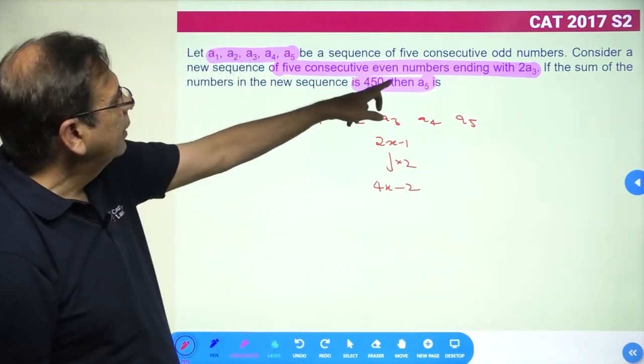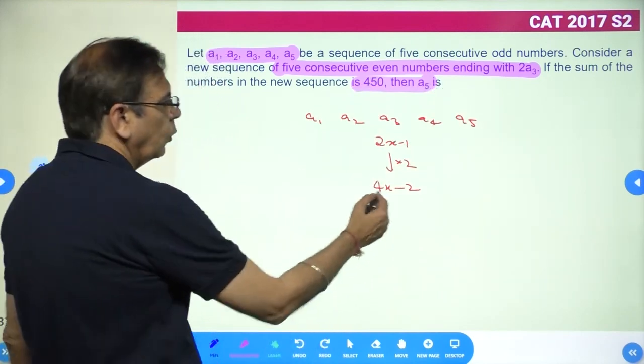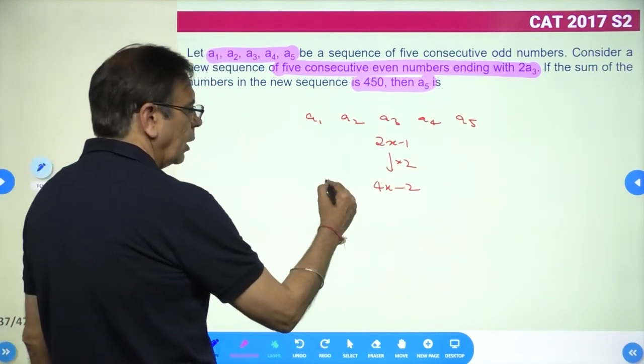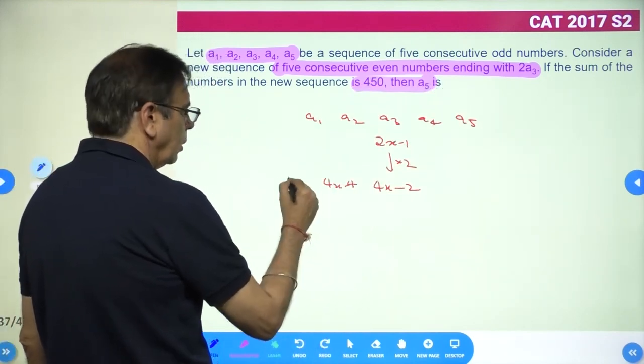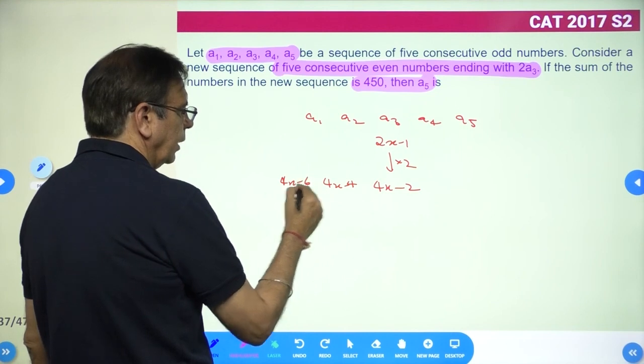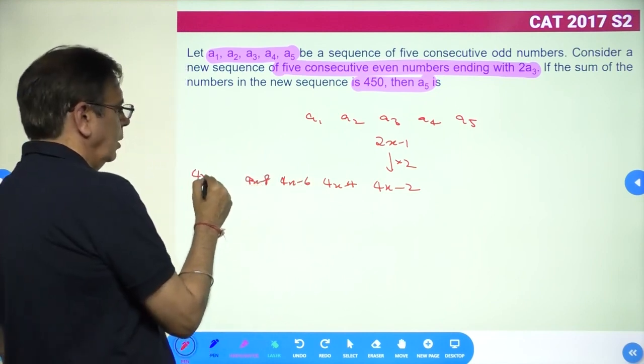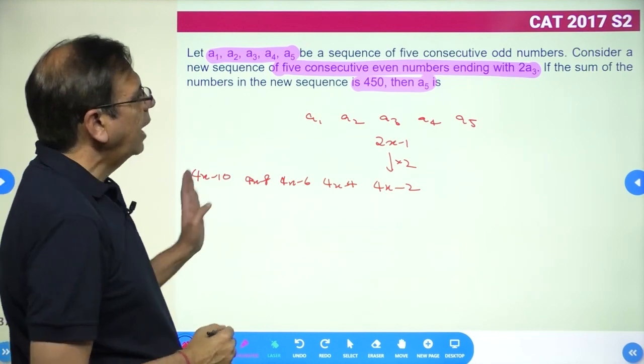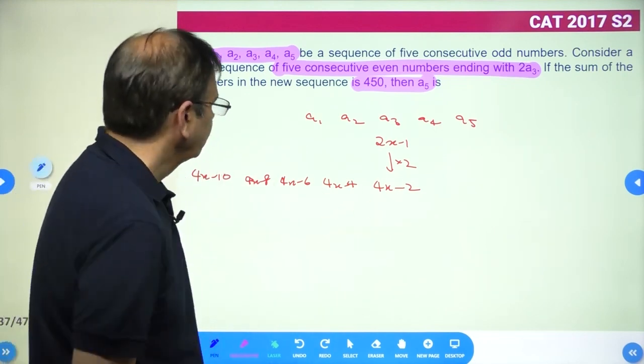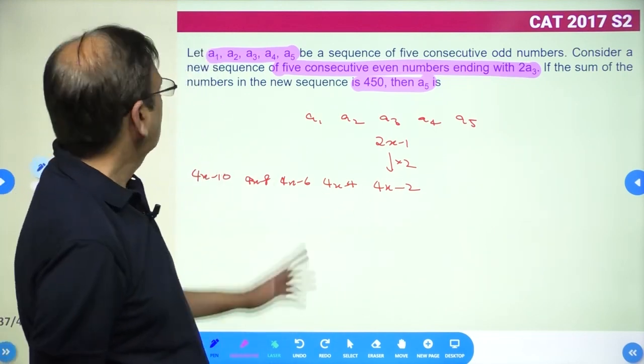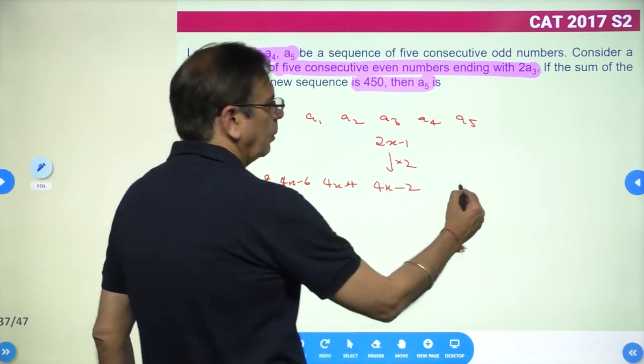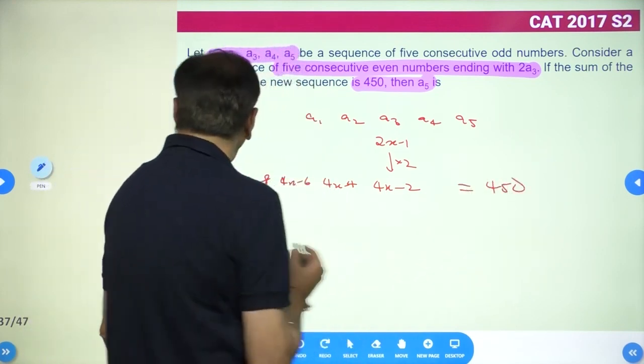A new sequence of 5 consecutive even numbers ending with twice of a3. The sum of this new sequence is 450. The sum of these is 450. So what happened?